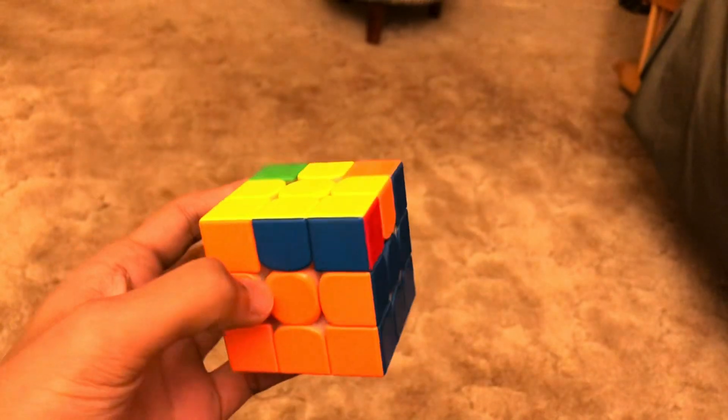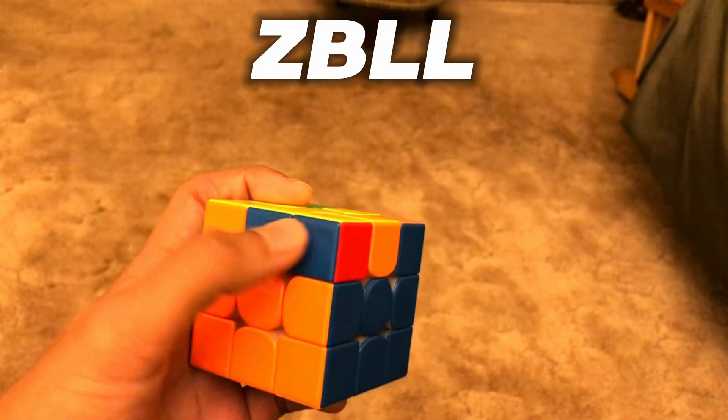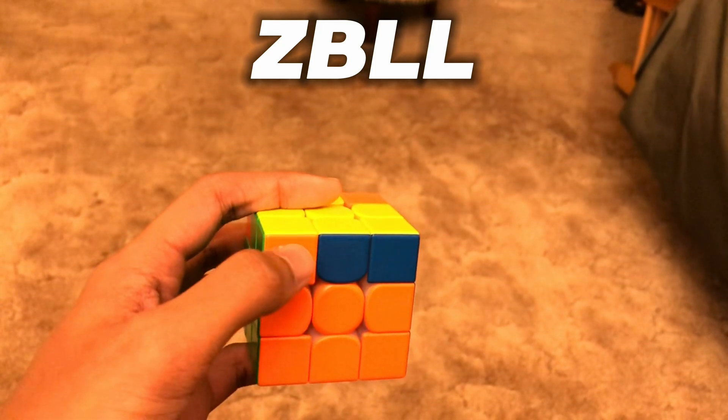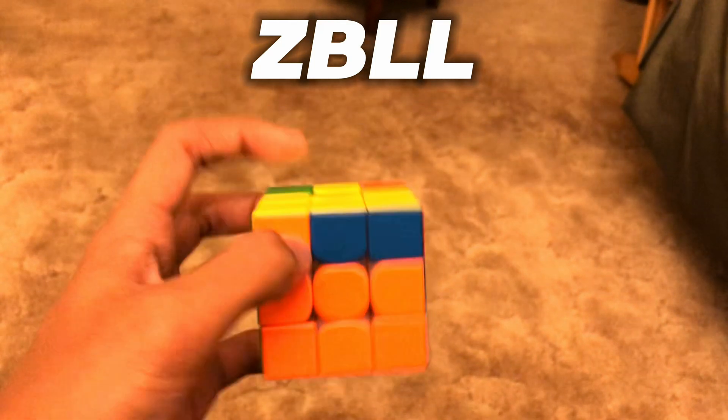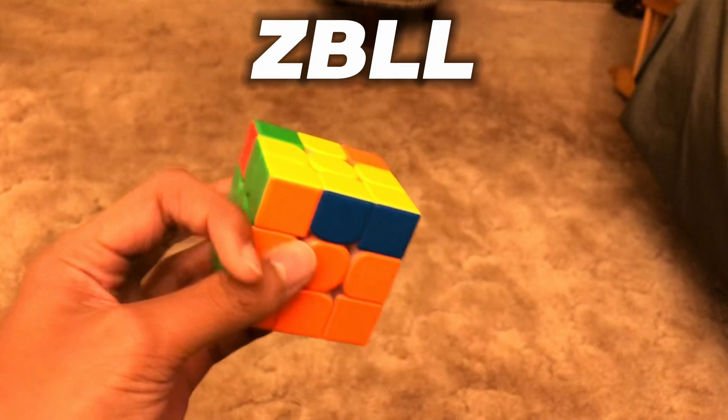And then it gives you this ZBLS. So first you'll notice a block and a block here, you'll notice that these two are the same and these two colors are opposite. This is a U-case, so how you do this one is you hold it from here, you tell a UF by this edge over here.